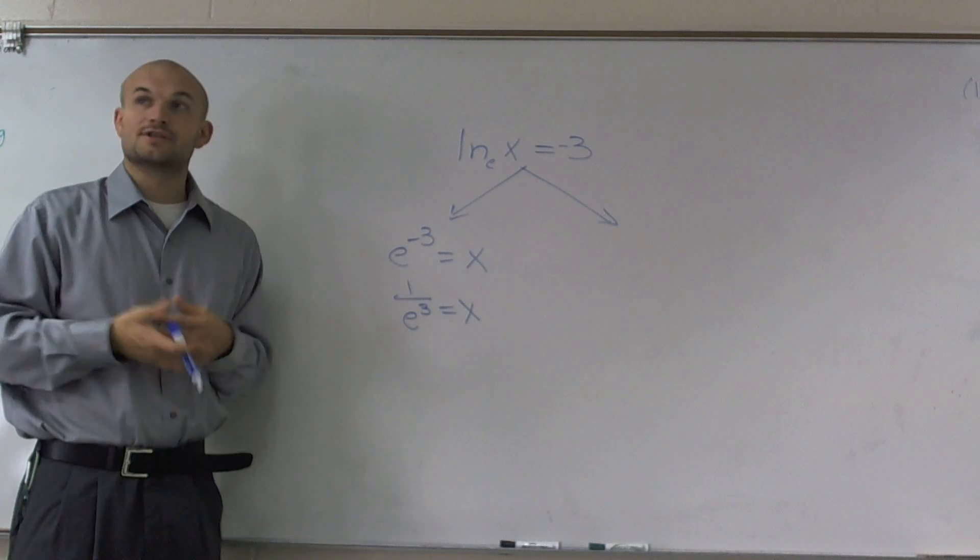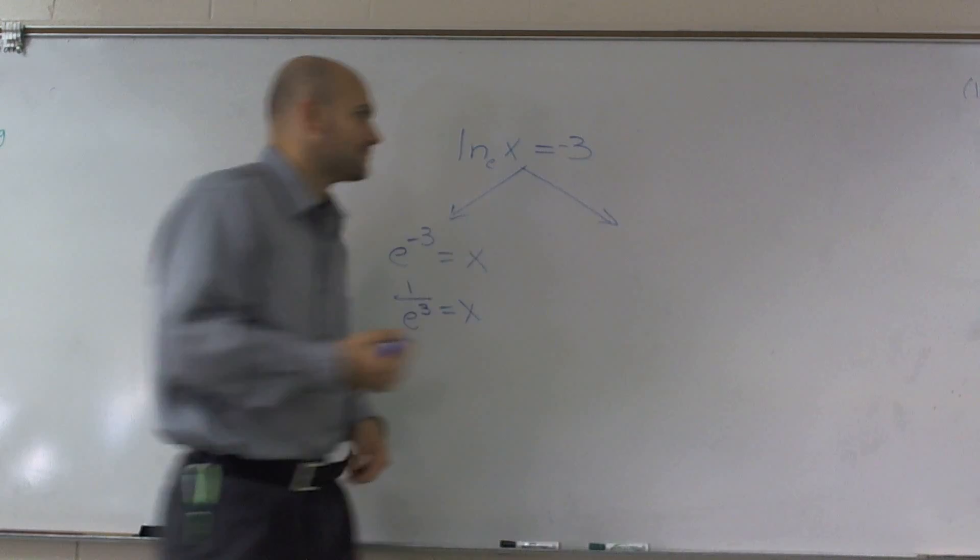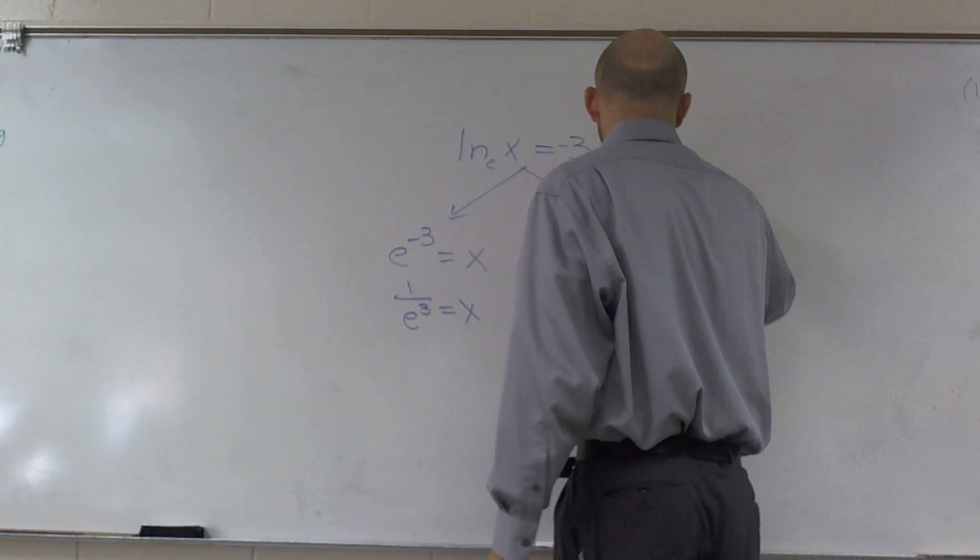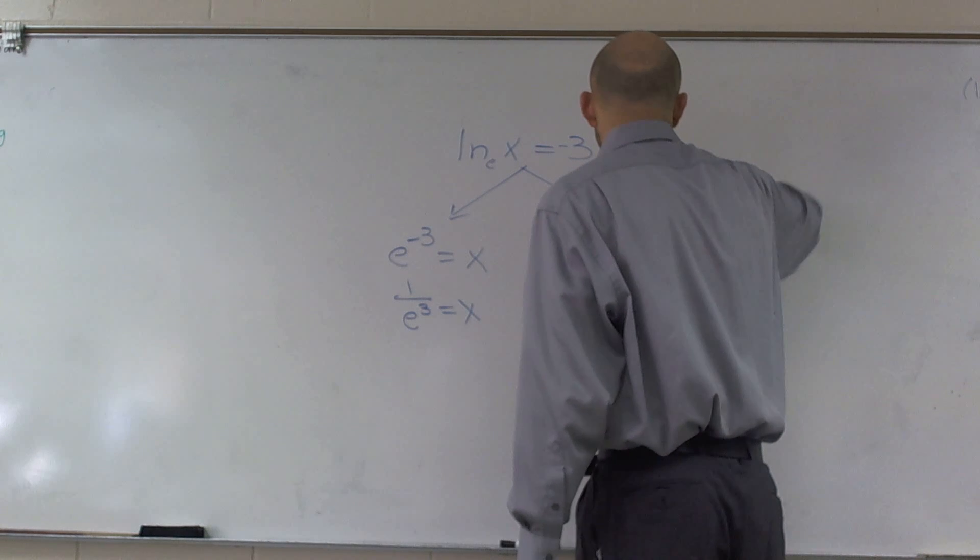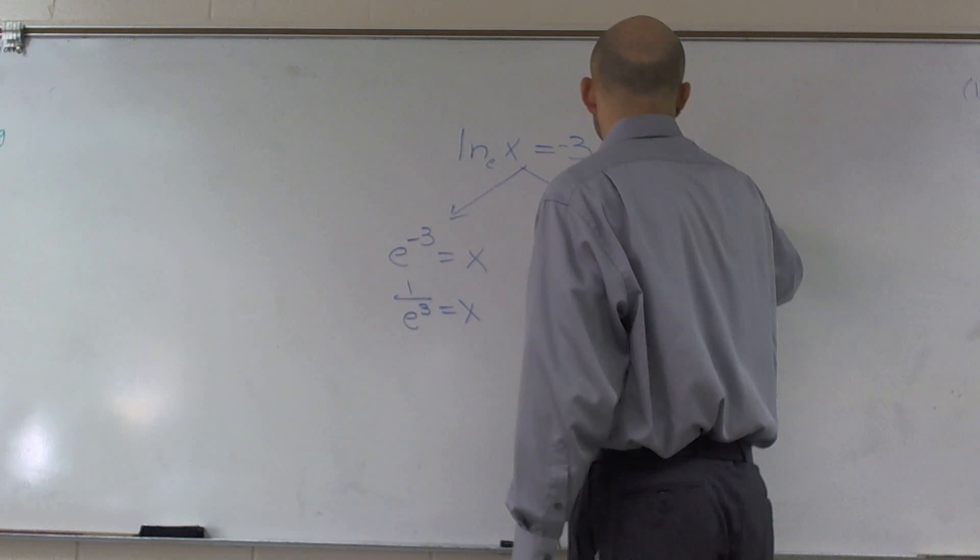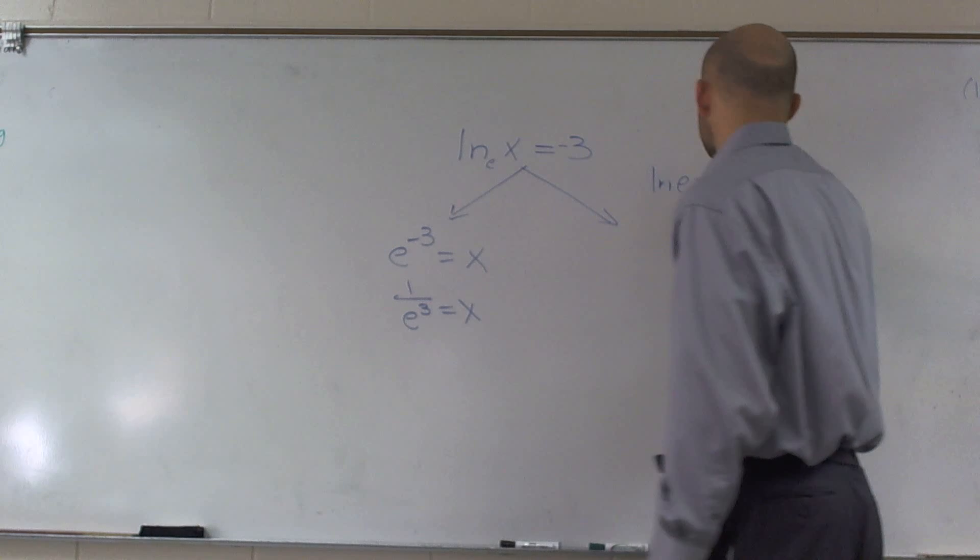Or the other way you can do this is use your understanding of inverse properties. You guys remember this - I'll do it with ln since we're doing this natural order. ln of e equals 1, right?